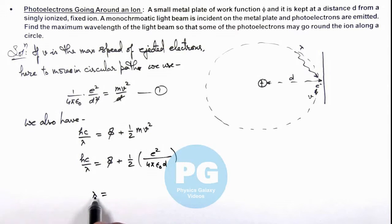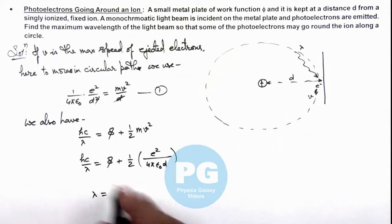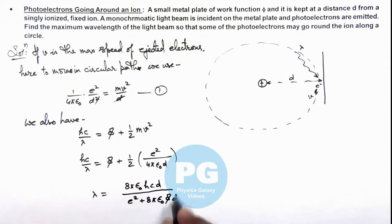Which is the maximum lambda required, or this is the minimum energy required so that the fastest electron will go round the circle. Numerically this is given as 8 pi epsilon not h c d divided by e square plus 8 pi epsilon not phi d. That will be the result of this problem, and this is the value of maximum wavelength or corresponding to minimum energy of radiation for which this will take place.